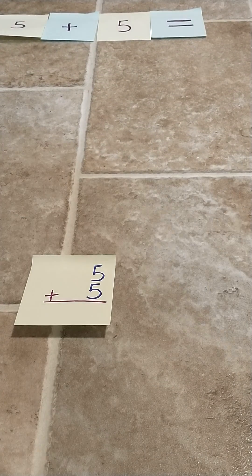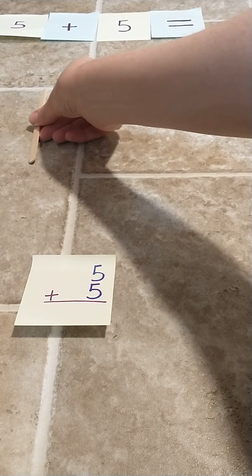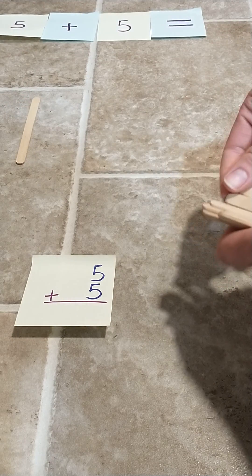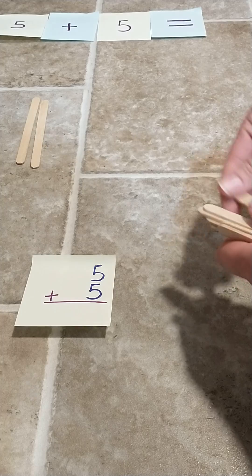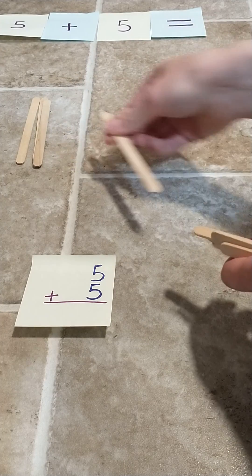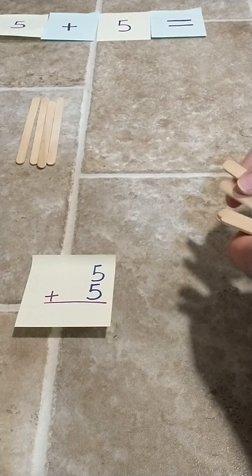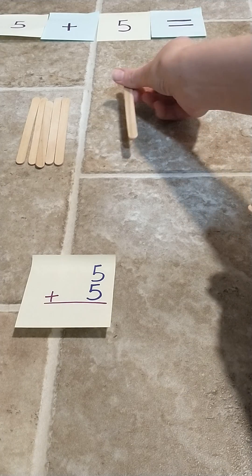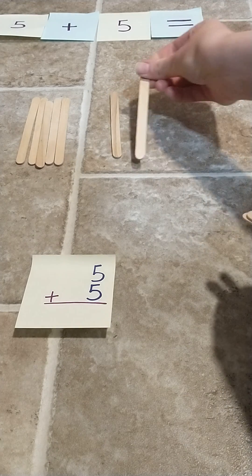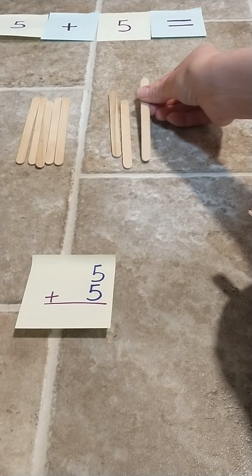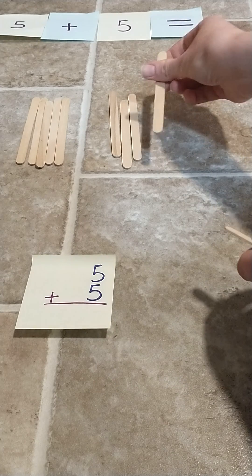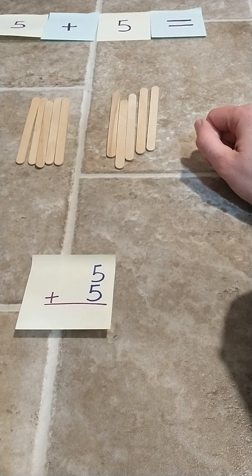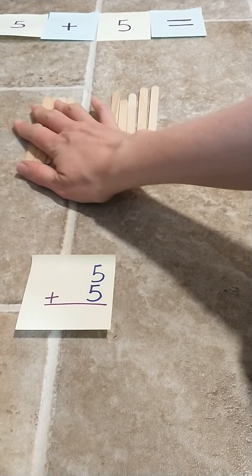Popsicle sticks are a great way to teach addition. So you have your problem, five plus five. We count out one, two, three, four, five, then plus five: one, two, three, four, five. And since it's addition, we put them together.